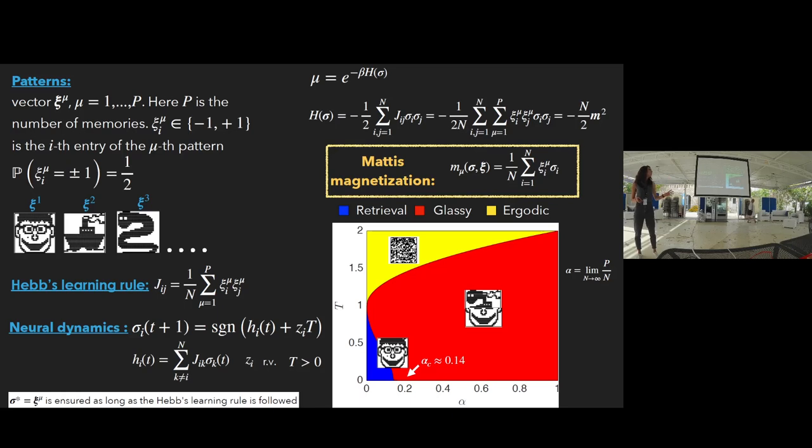To understand how the model works, we can see the phase diagram of the network in terms of temperature T and alpha, that is essentially the ratio between the number of patterns that we store and the number of neurons. We can see three different phases. When T, the temperature, is very high, the system is completely ergodic. When T is less than one and the number alpha is more or less 0.14, the system works well as associative memory. While if we are in this huge part, the complexity prevails, and we can see a mixture of patterns.